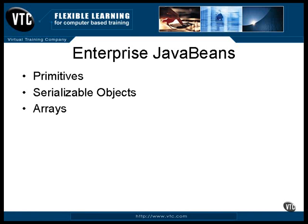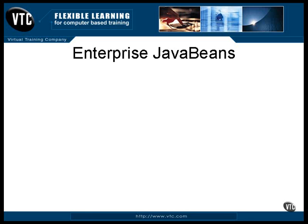You can send arrays as long as the members of the arrays all can be sent. Remote objects are addressed by stubs that reference them, so sending the stub is sort of like sending a gateway to the remote object. The object stays where it is and stays remote, and the access to it is sent. Those are the fundamentals of clients talking to beans. In the next movie, we'll be looking closer at the beans themselves.